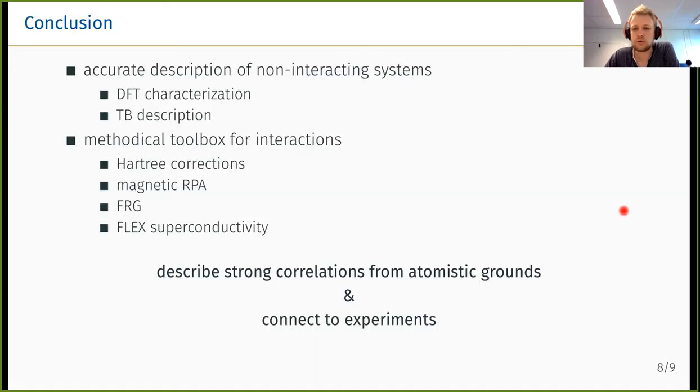To conclude, by employing this atomistic analysis to these moiré heterostructures, we firstly have an accurate description of the non-interacting systems by first a DFT characterization and then a tight binding description of the model, and we can compare this to the experimental non-interacting setups. As a second step, we employ a certain methodical toolbox for interactions which first includes Hartree corrections that are relevant for instance for twisted trilayer graphene or twisted bilayer graphene, and then we can start to do magnetic random phase approximation or FRG or fluctuation exchange to describe superconductivity. Our main aim is to describe these strong correlations from atomistic grounds and connect our results to experiments. By that, I thank you for your attention.